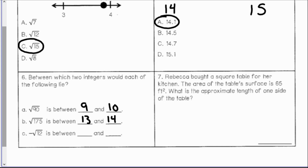The square root of negative 12 is between 3 and 4, because 3 squared is 9 and 4 squared is 16. However, there's a negative sign out in front, so it should be between negative 3 and negative 4.